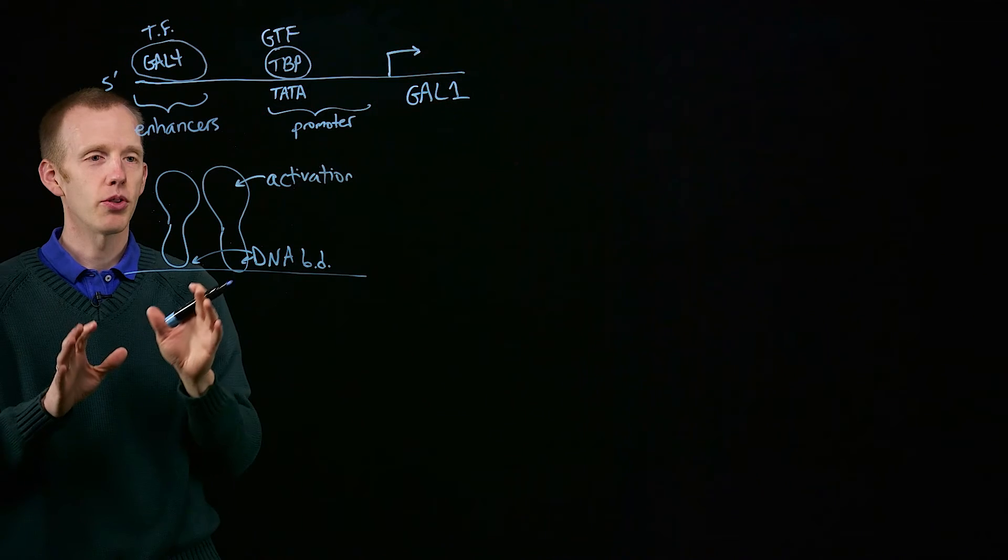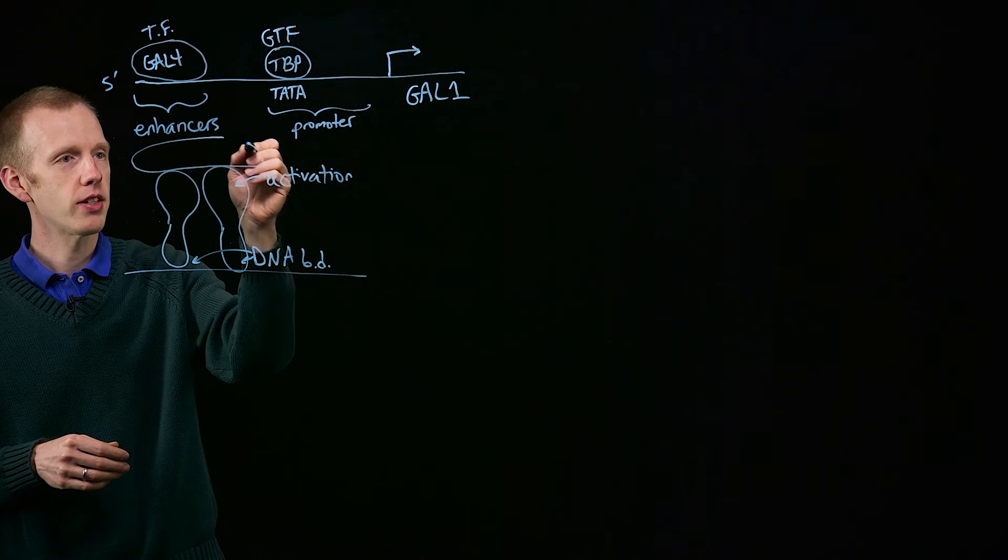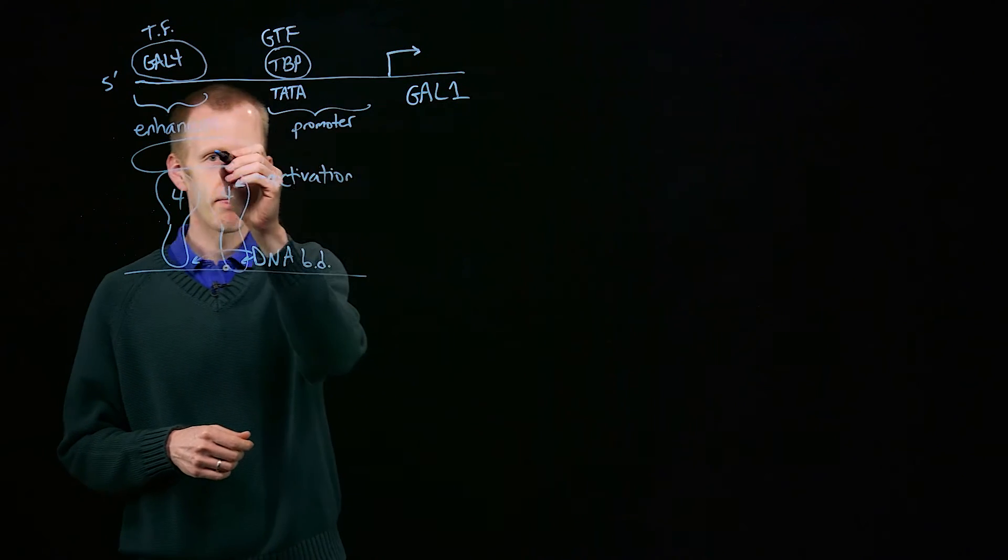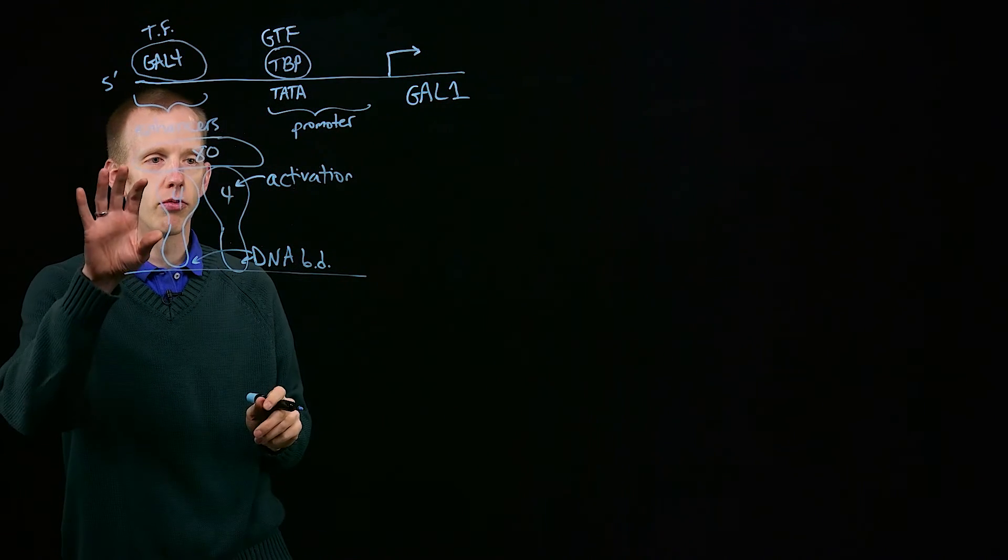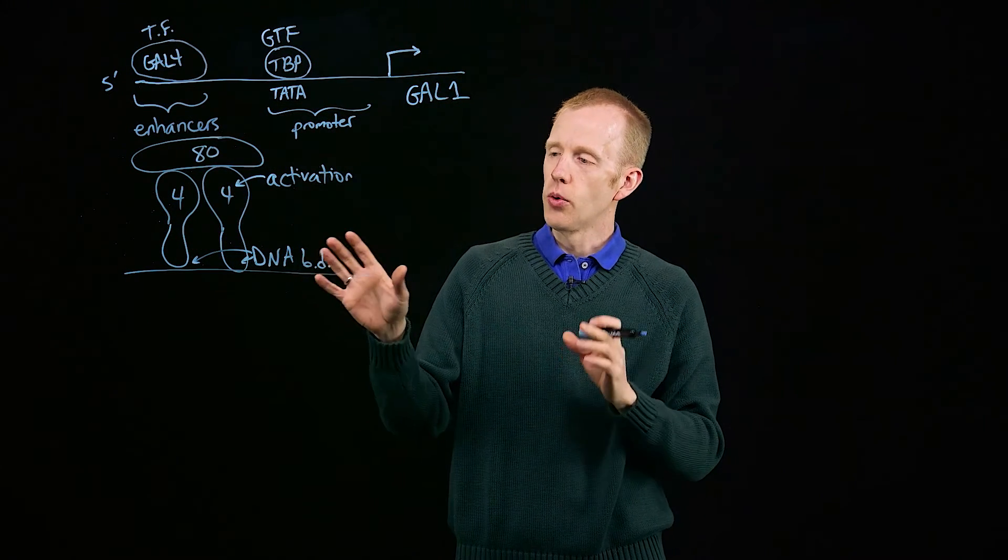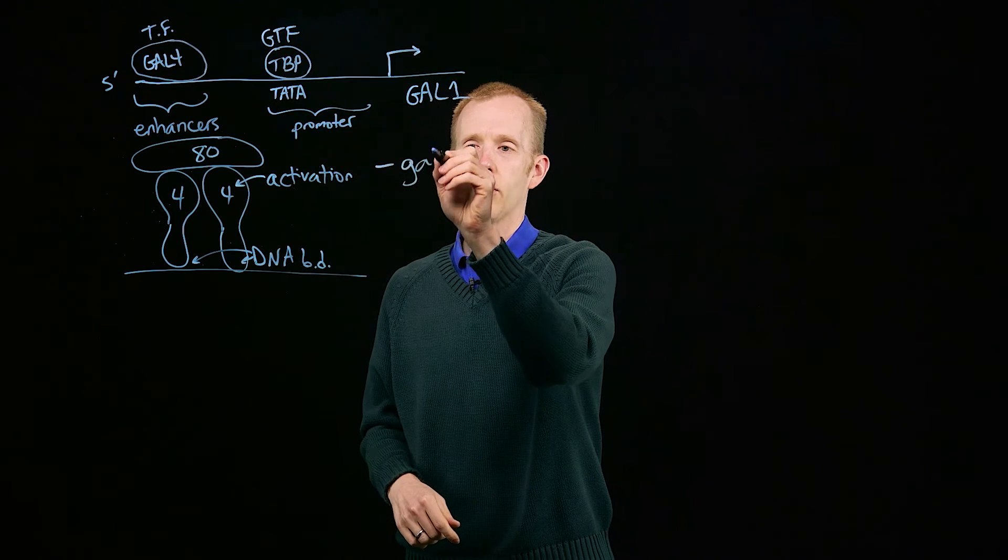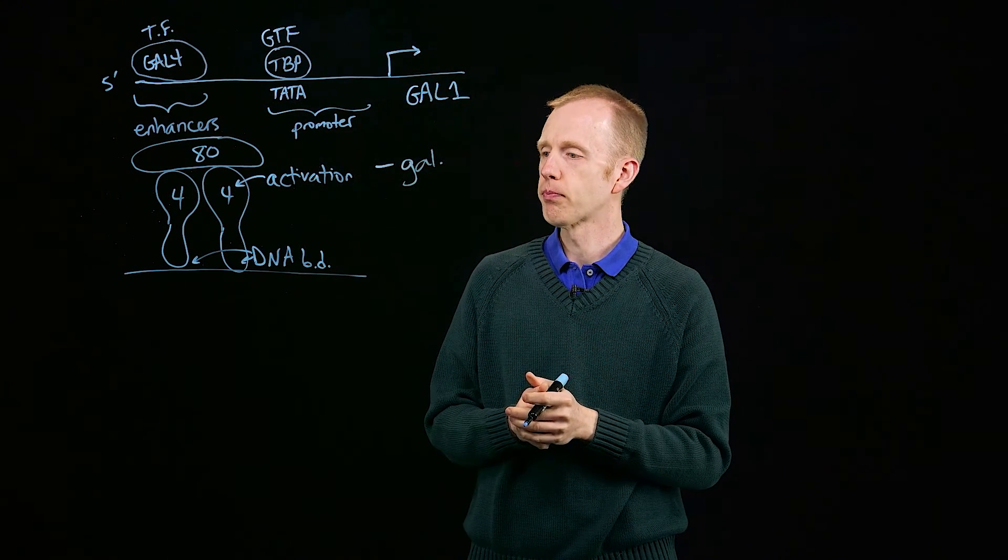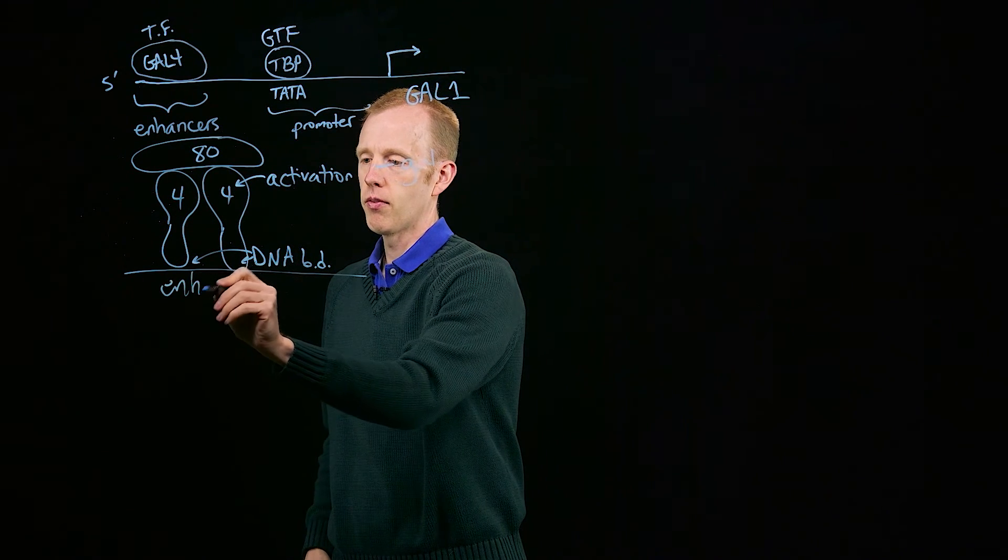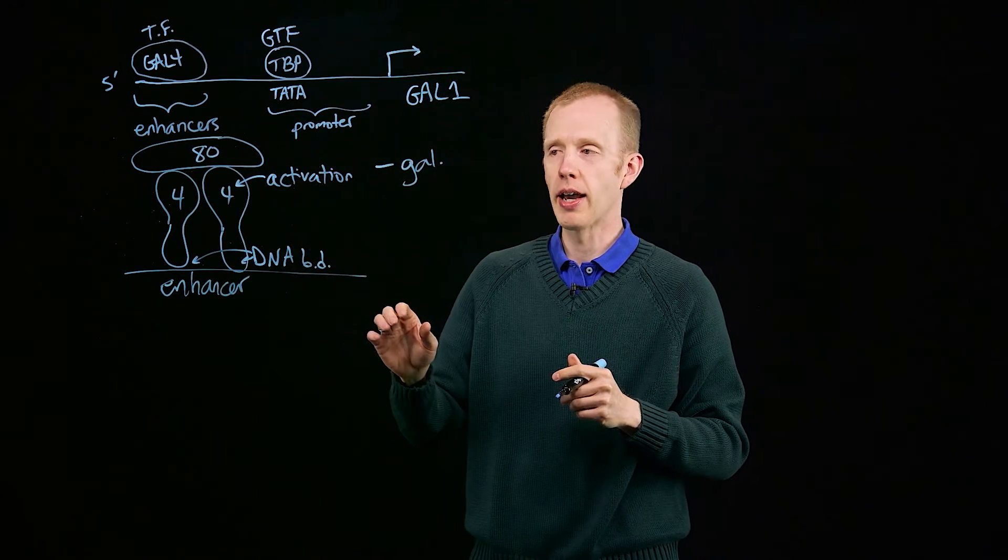Now, when galactose is not present, the normal state of the situation is that there's another protein that binds to GAL4. Here's GAL4. And that protein, GAL80, prevents GAL4 from activating transcription. What's going to happen is, and this is what's the case without galactose, GAL4 is bound to the enhancer, but it's not turning on transcription of GAL1 yet because it's blocked from doing so by GAL80.